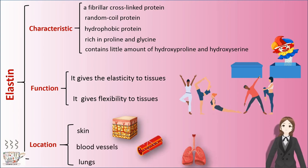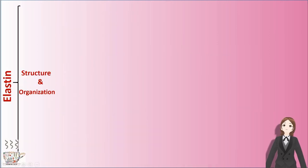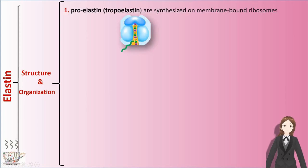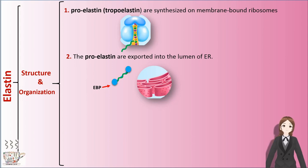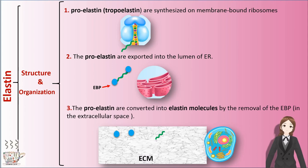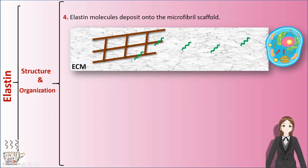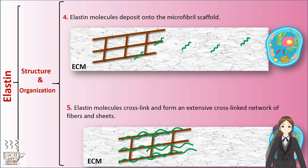Regarding the structure and organization of elastin: first, proelastin (tropoelastin) is synthesized on membrane-bound ribosomes, then exported into the lumen of the ER. The proelastin is converted into elastin molecules by the removal of the EBP in the extracellular space. Elastin molecules then deposit onto the microfibril scaffold, and finally the elastin molecules cross-link to form an extensive cross-linked network of fibers and sheets.